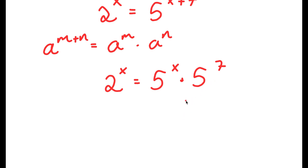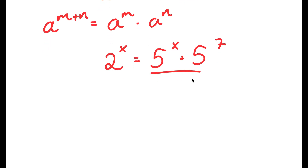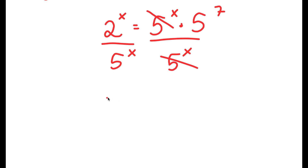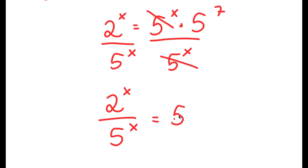And now from here, I'm going to divide both sides by 5 to the power of x. These two cancel out, and I get 2 to the power of x over 5 to the power of x is equal to 5 to the power of 7.